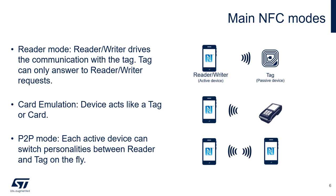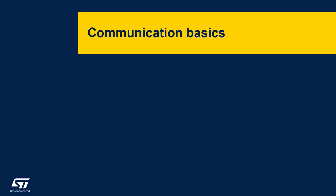There are three main NFC modes. The first is reader mode. In this mode, the reader-writer drives the communication with the tag, and the tag can only answer the reader-writer requests. There's also card emulation mode, and this is simply when a device acts like a tag or card. In addition, there's peer-to-peer mode, and each device can switch personalities between a reader and a tag on the fly.